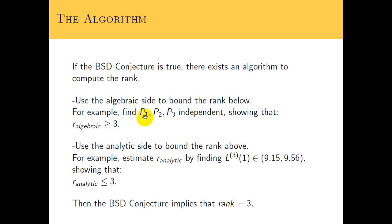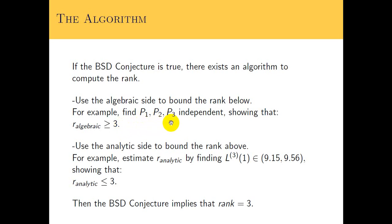On the algebraic side: if we have three points that are independent — if we found three points that each generate an independent integral dimension with only trivial overlap with any of the other points — then the algebraic rank must be at least three, because each one spans an integral dimension. So the group will be isomorphic to Z³ cross some torsion piece that we're not really interested in.